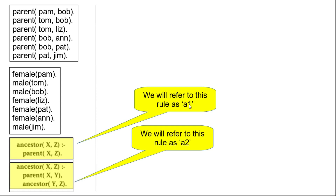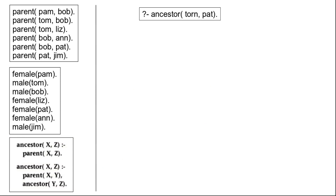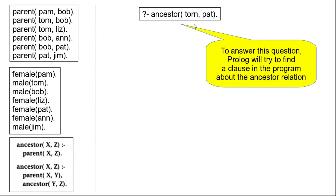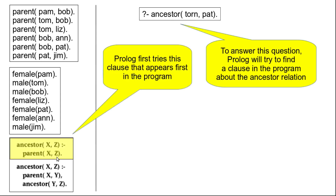For explanation purposes, we will name the first ancestor rule A1 and the second rule A2. Now let us say that we need to answer the question whether Tom is an ancestor of Pat or not. When Prolog is given this question, it will try to find what clauses match the ancestor relation, and we will see that we have two different clauses.